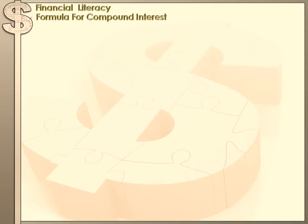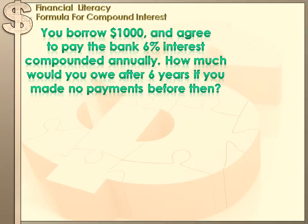Let's look at an example — it'll refresh your memory and lead us to understanding this formula. Let's say you borrowed $1,000 from the bank and agreed to pay them 6% interest compounded annually. How much would you owe them after six years if you made no payments before then?